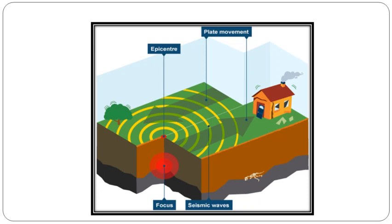The epicenter is the point on the earth's surface which is vertically above the focal point or focus of an earthquake. You can see the red-colored circle — that is the focal point, which is exactly below the epicenter. From that point only, the seismic waves are generated which cause the earthquake, and from that point the major loss occurs. The yellow-colored seismic waves generated due to the earthquake are also visible.